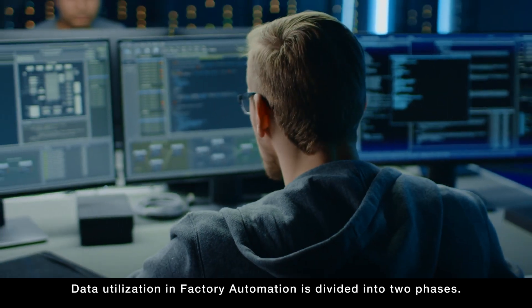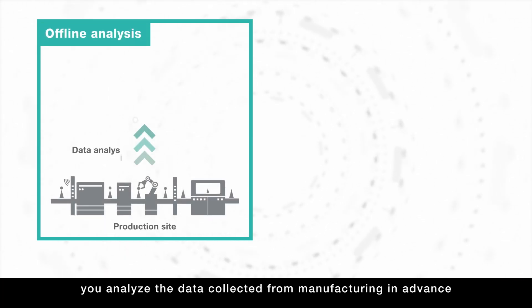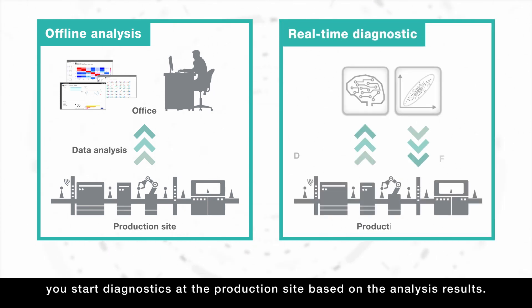Data utilization in factory automation is divided into two phases. In the first phase, you analyze the data collected from manufacturing in advance. And as the next phase, you start diagnostics at the production site based on the analysis results.